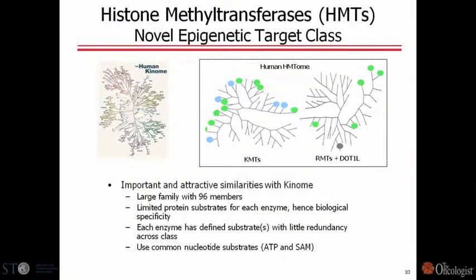When we first got started about two years ago, one of the first questions we asked was: how many of these enzymes are there in the human genome, and what is their chemical-biological relatedness to one another? Surprisingly, there wasn't a good answer to that question. So we performed a systematic survey of the human genome, and what we found was that there were almost 100 of these enzymes—96 to be precise.